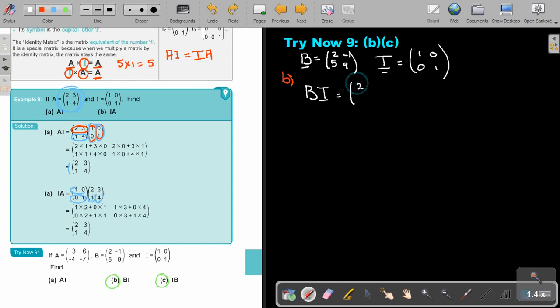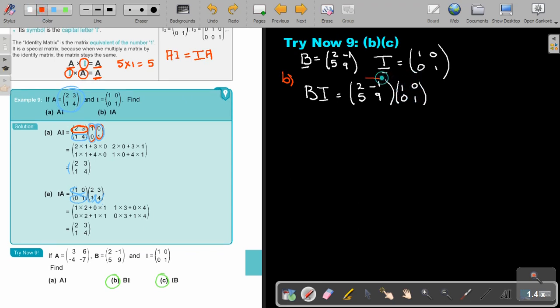it's going to be 2 and 5, negative 1 and 9, times 1 and 0, 0 and 1. So let's start multiplying. Remember, always a row by a column. So if I do that, I'm going to say 2 times 1 is 2 and that's 0. So it's just 2.